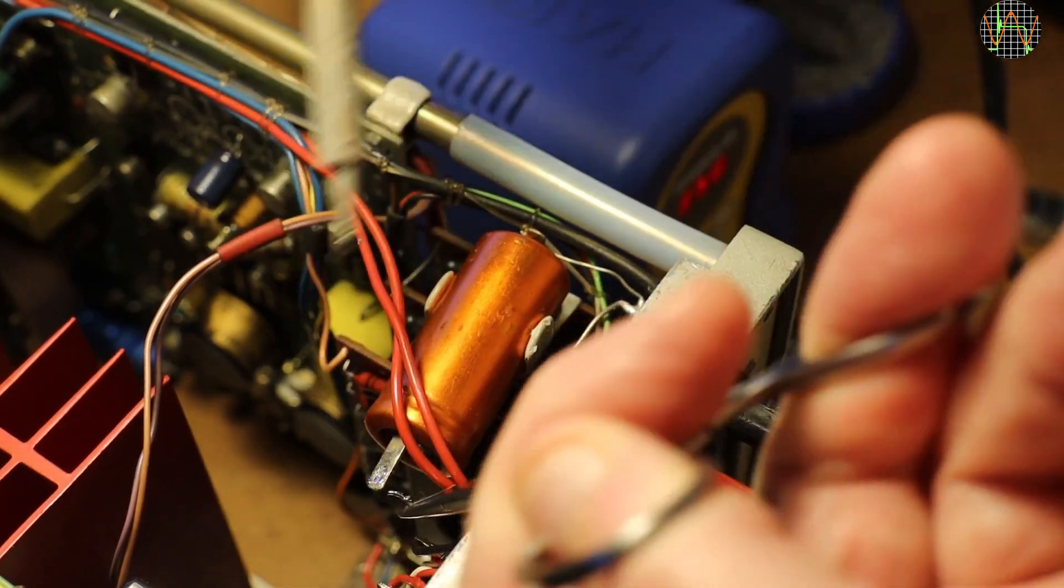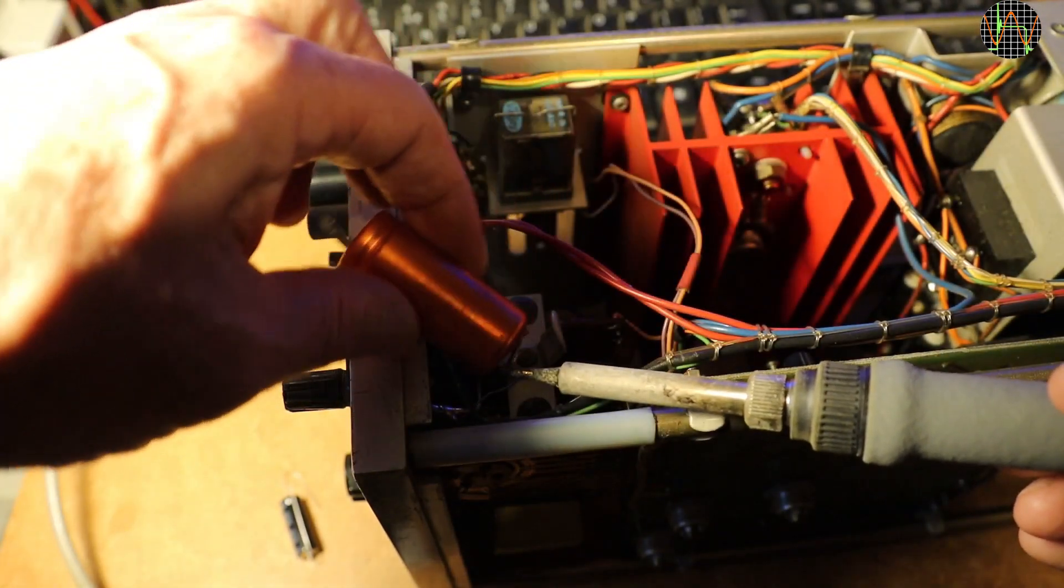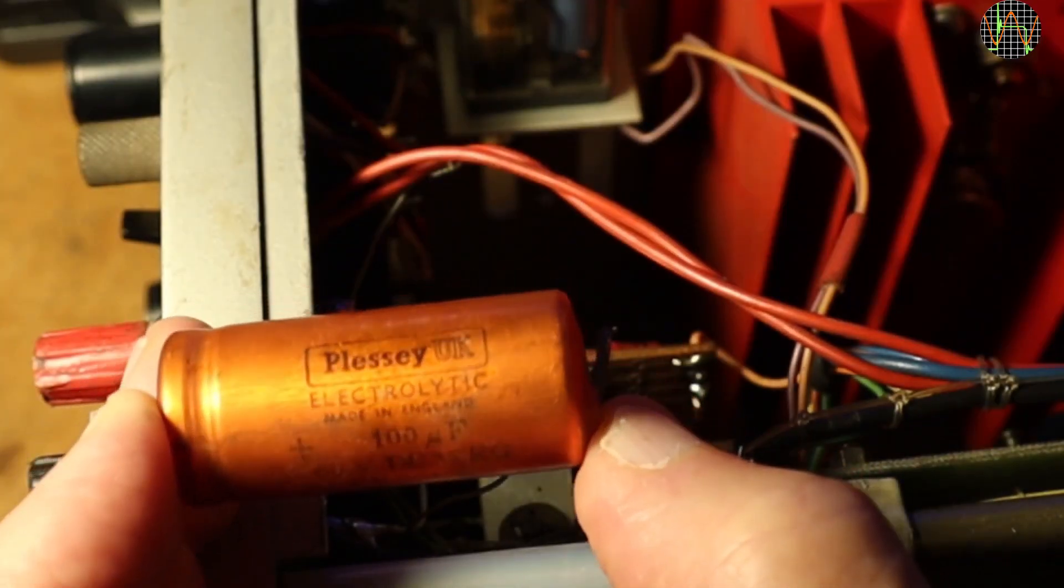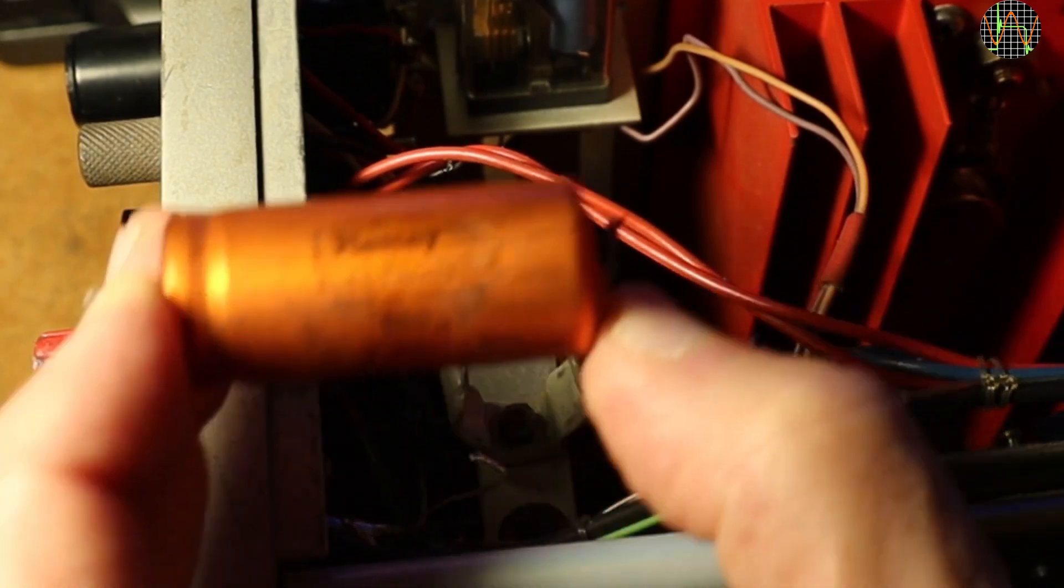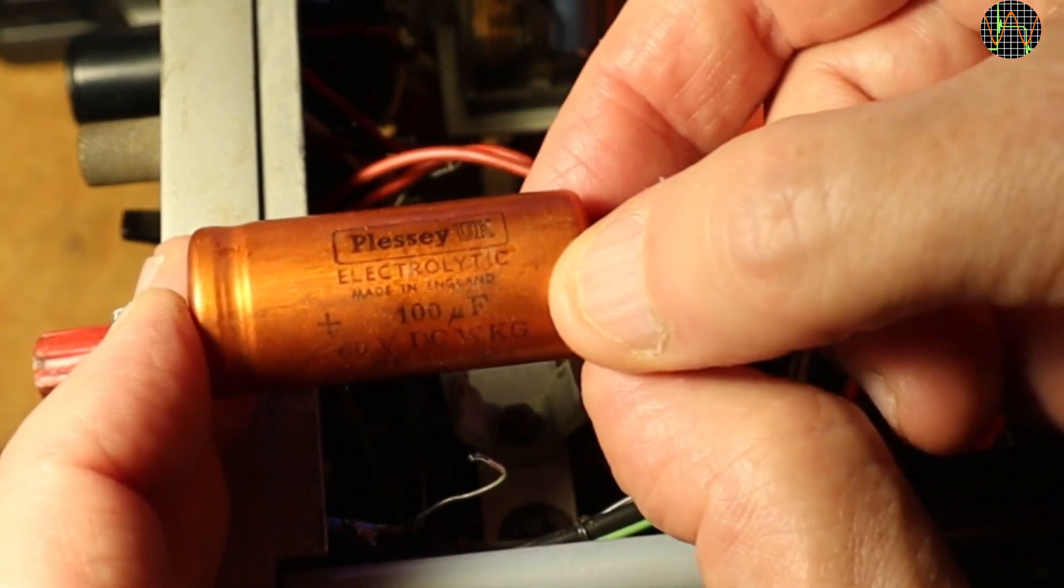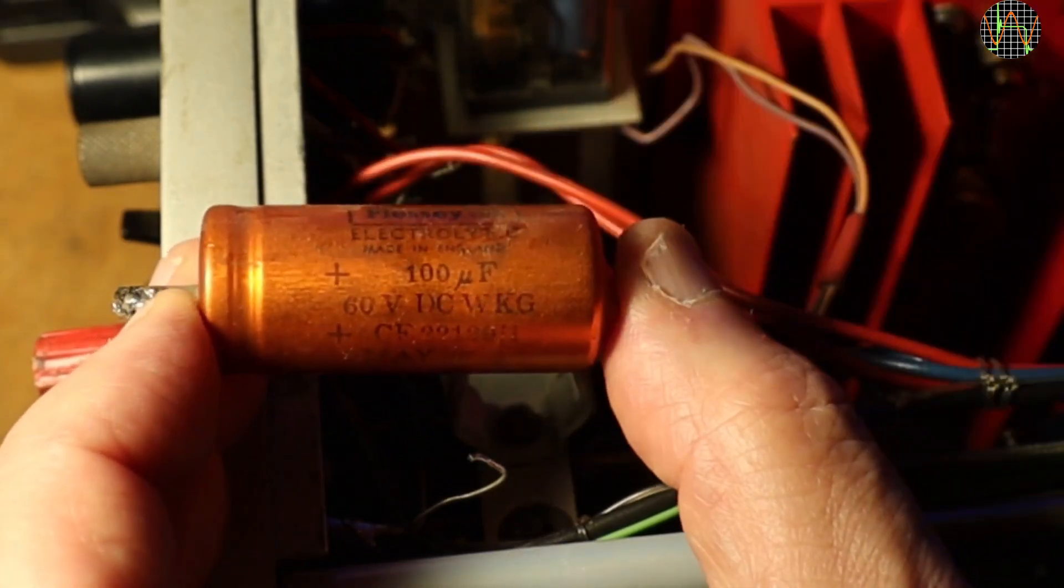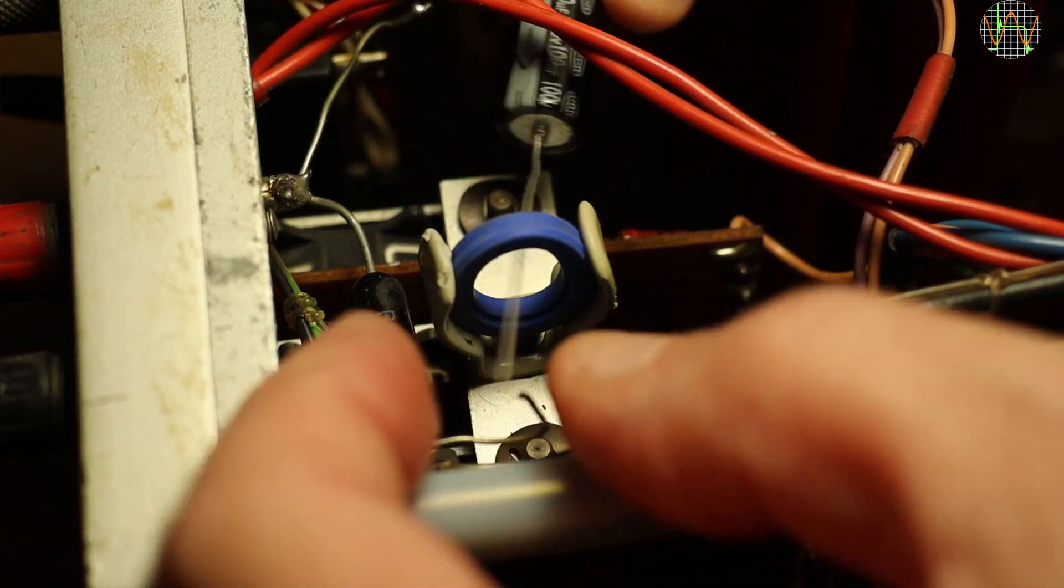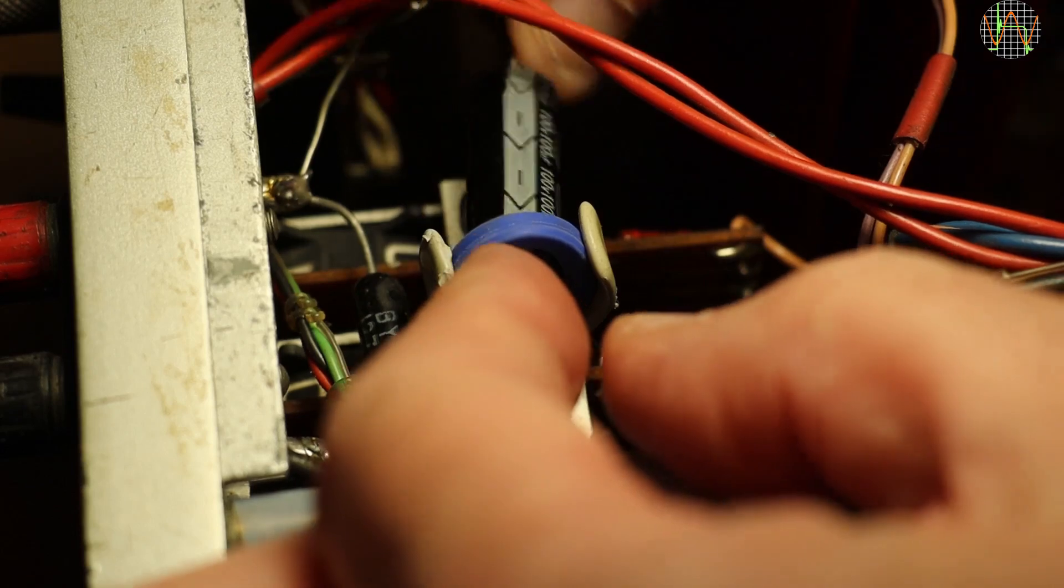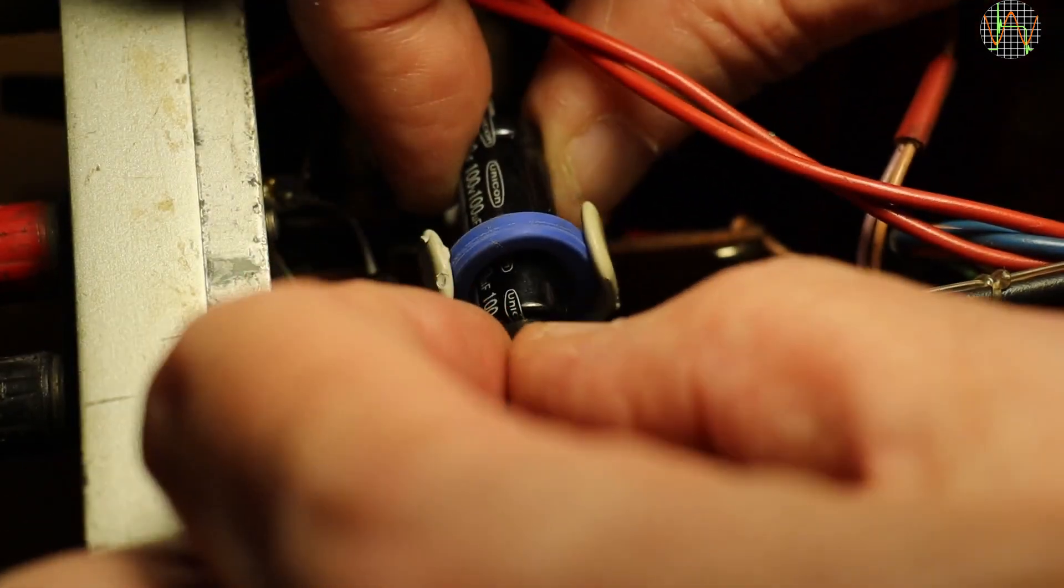But there are more electrolytic caps. Here is one directly across the output terminals. That should go as well. And really, 100μF rated for 60V across an output that can be set to 59.9V. They were really cutting it close. And it is from May 1965. Wow. The new 100μF cap is rated for 100V but much smaller, so I put an O-ring into the clamp to hold it in place and solder it in.